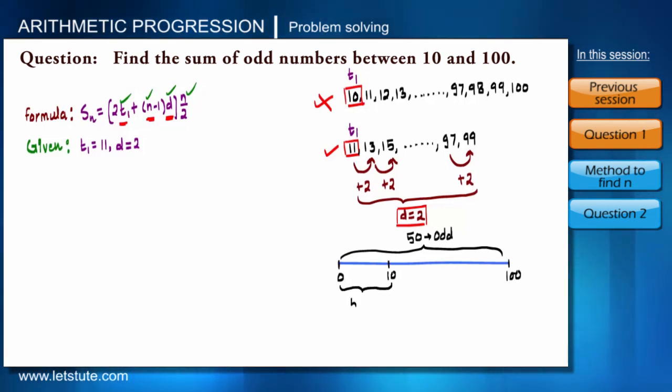And from 0 to 10 there will be 5 odd numbers. So from 10 to 100, we will not include those 5 odd numbers which are lying between 0 to 10. That means from 10 to 100 there will be 45 odd numbers only, right?